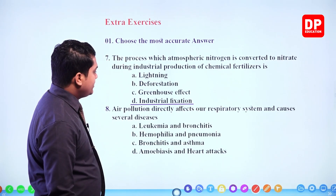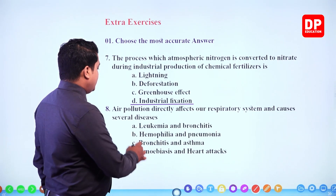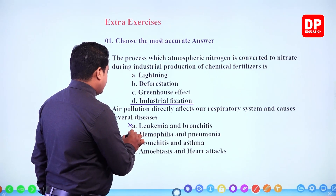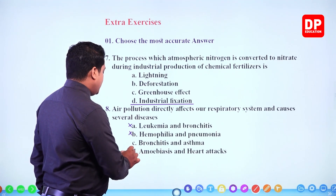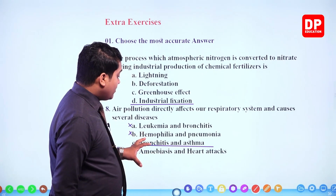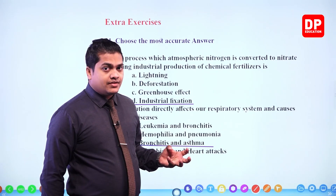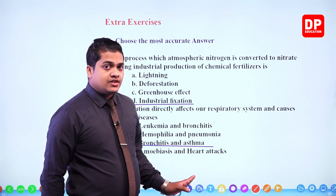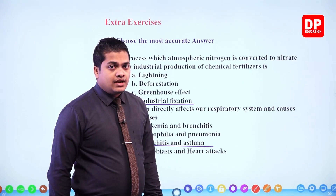Next one: air pollution directly affects our respiratory system and causes several diseases — leukemia and bronchitis, haemophilia and pneumonia, bronchitis and asthma, amoebasis and heart attacks. Leukemia is not a respiratory disease; haemophilia and pneumonia are also incorrect; heart attacks are totally incorrect. Our answer should be bronchitis and asthma. Bronchitis is inflammation of the bronchioles within the lungs, which is a respiratory system-related disease. Asthma is also related to the respiratory tract.